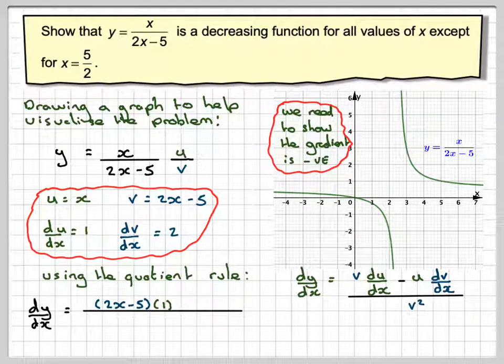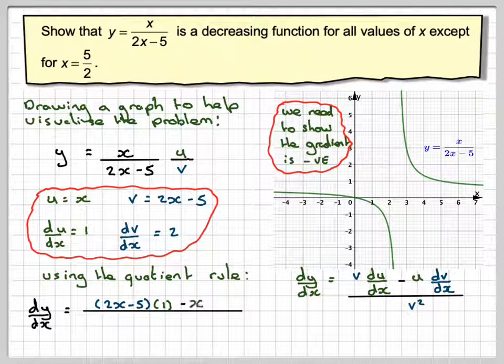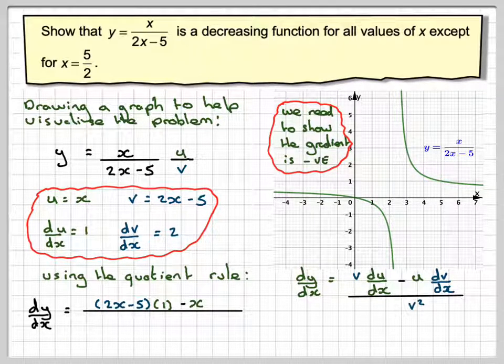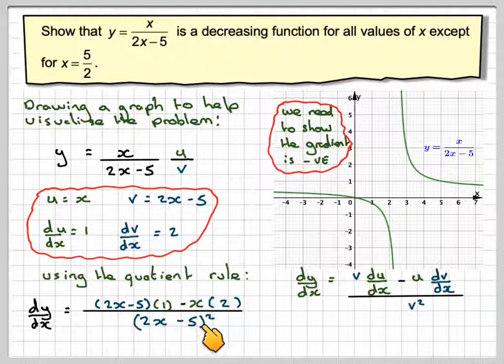...minus u which is x times dv by dx which is 2 over v squared which is 2x minus 5 all squared. So writing that out again...